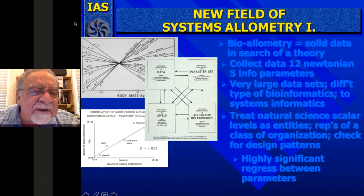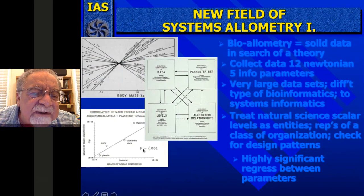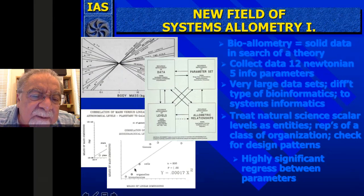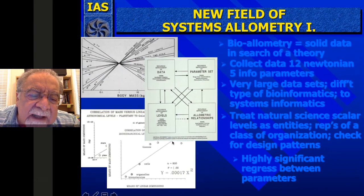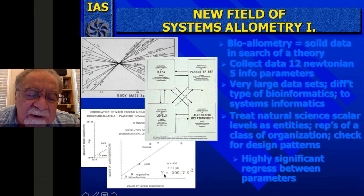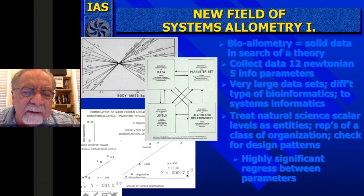This is an important one here — mass versus linear — and it looks at planets, stars, clusters of stars, and clusters of galaxies. The probability is less than 0.001. If you take the means of mass dimension and the means of linear dimension, they're allometrically related. And here in biology too — it's 0.00017. It comes up with this log line between logs of means of linear dimensions and mass for all biological things, giving the allometric equation y equals 0.0017 times x squared.